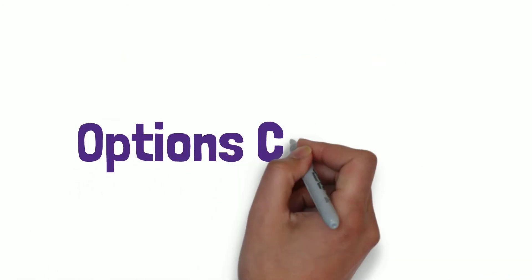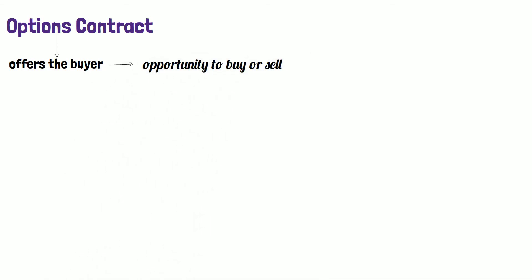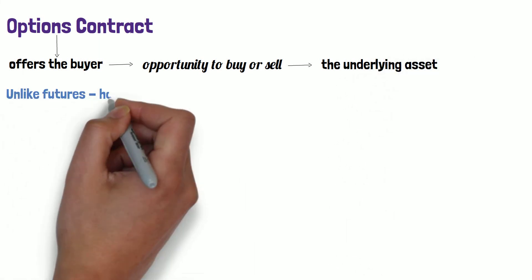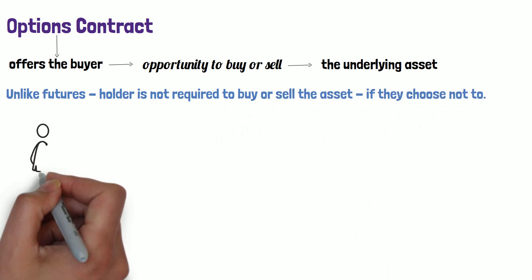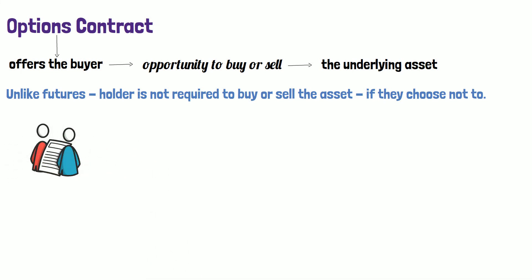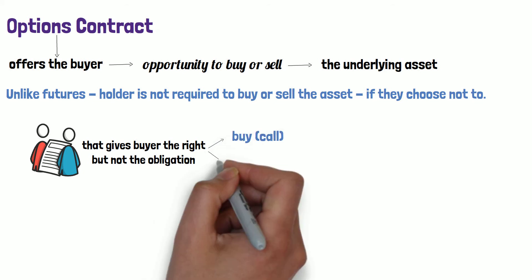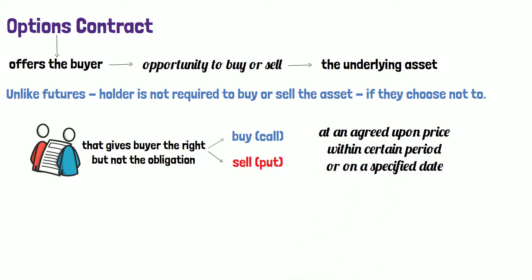With an understanding of forwards and futures, let us move on to options contracts. An options contract offers the holder the opportunity to buy or sell the underlying asset depending on the type of contract they hold. Unlike futures, the holder is not required to buy or sell the asset if they choose not to. Options can be understood as a privilege sold by one party to another that gives the buyer the right but not the obligation to buy or sell any underlying at an agreed-upon price within a certain period or on a specified date, regardless of changes in the underlying market price during that period.